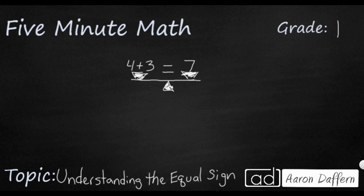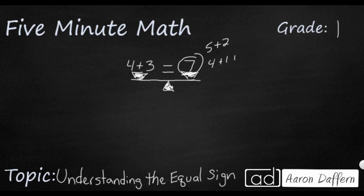One way we could do this would be 4 plus 3 equals 7. But let's think about this 7 for just a moment. There are some other things that equal 7. You could say 5 plus 2 makes 7. You could say 4 plus 1 plus 1 plus 1 — that also equals 7. You can even do a subtraction problem: 12 take away 5, that equals 7. And you could replace 7 with any of those expressions.